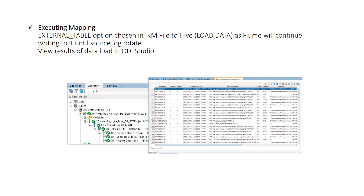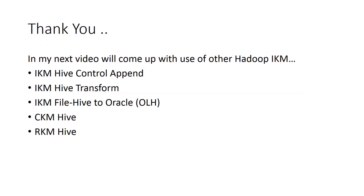You can view the loaded data by clicking on the model to see what data was loaded into your Hive tables. This is a simple mapping where the source is external or HDFS files and the target is a Hive table. In our next video, we'll cover how other IKMs are used to integrate Hadoop with Oracle — including IKM Hive Control Append, IKM Hive Transform, and IKM File Hive to Oracle. Thank you.